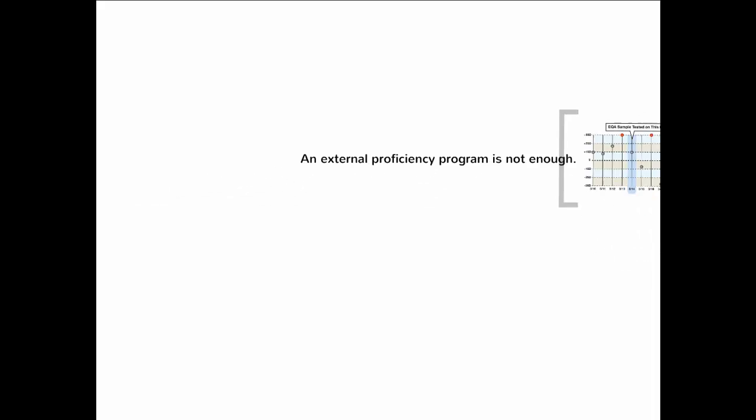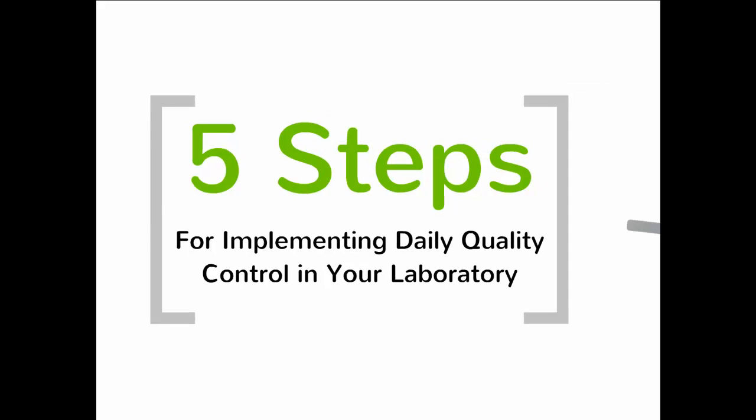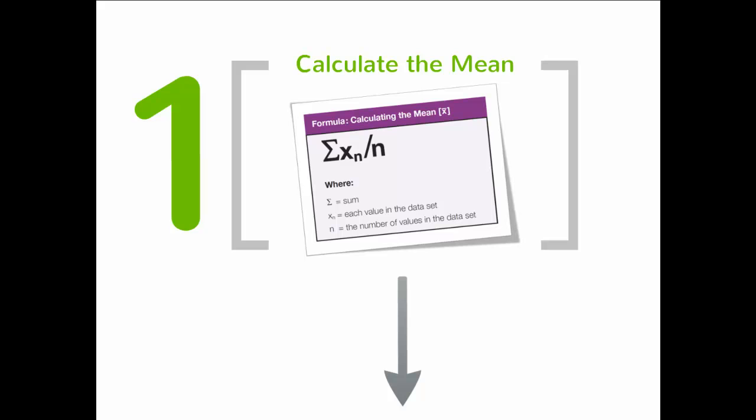Let's look at five steps to implement daily quality control in your laboratory. Step one is calculating the mean. The mean, or average, provides the best estimate of the analyte's true value for a specific level of control. I encourage you to take a look at our video for calculating the mean if you need more information.